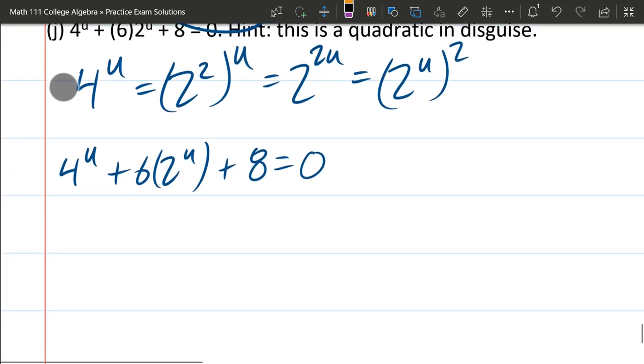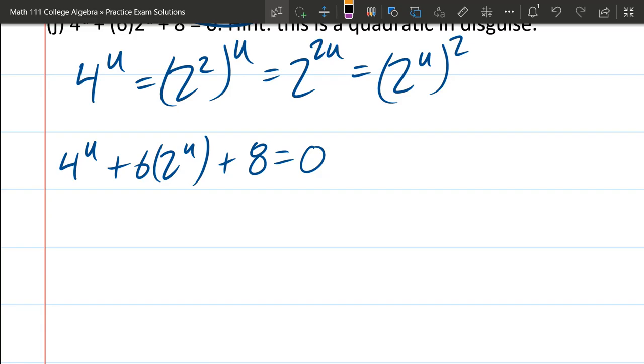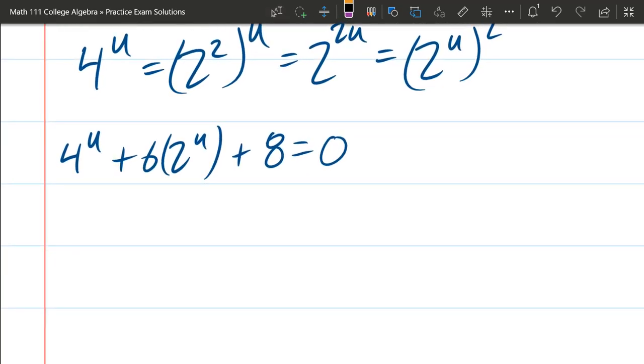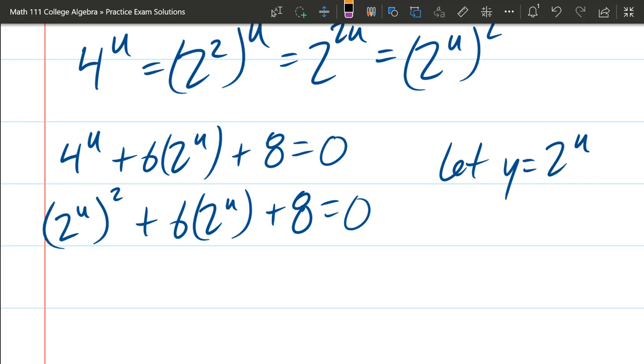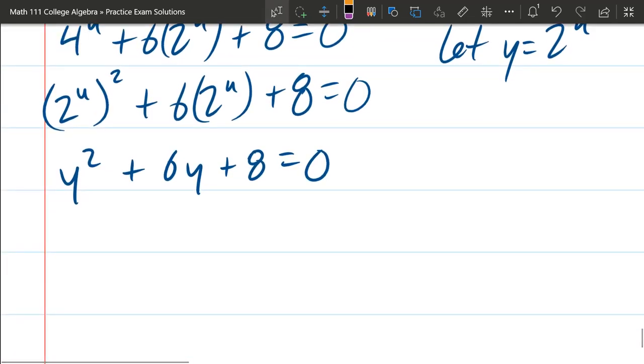We just wrote down why 4 to the u is 2 to the u squared plus 6 times 2 to the u plus 8 equals 0. So I'm going to make a substitution and let y equal 2 to the u. So I have y squared plus 6y plus 8 equals 0. And look at that, another quadratic. Maybe we can factor and get lucky. 8, there's 8 times 1 or 4 times 2. I do need to add to make positive 6. This is positive, so everything needs to be positive here. So we'll just try 4 and 2. 4 times 2 is 8. 2y plus 4y is 6y. This works. So we get y equals negative 2, y equals negative 4.